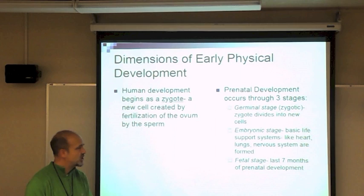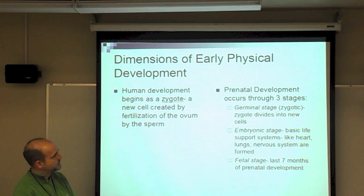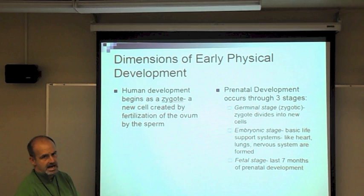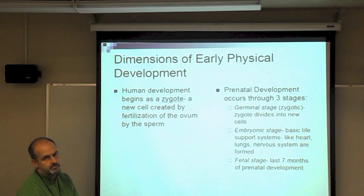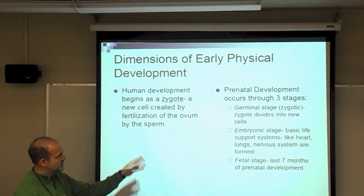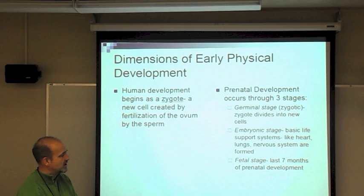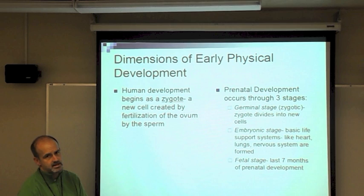Human development begins as a zygote — a new cell created by fertilization of the ovum by the sperm. Prenatal development occurs in three distinct stages. The germinal or zygotic stage is when the cell rapidly divides, moments after conception. The embryonic stage is when basic life support systems — heart, lungs, nervous system — are formed. This is the greatest threat from teratogens. If something goes wrong in the embryonic stage, the heart and lungs may not develop properly, impacting the rest of development. The fetal stage is the last seven months — the longest stage, when everything becomes more molded.